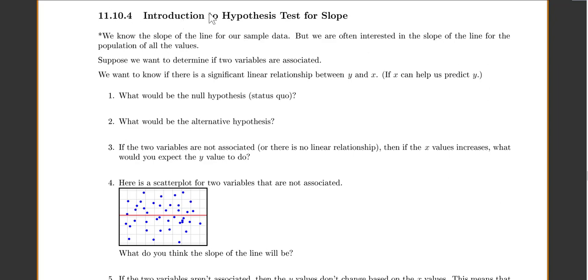That's important now for our hypothesis test for slope. We know our slope of our line for our sample data, but we're often interested in the slope of the line for the population of all the values. Suppose we want to know if two variables are associated. That means we want to know if there's a significant linear relationship between y and x, or we want to know if x can help us predict y.